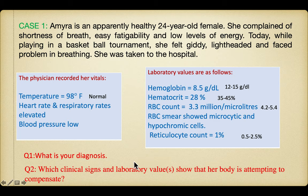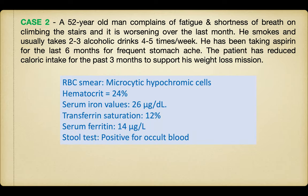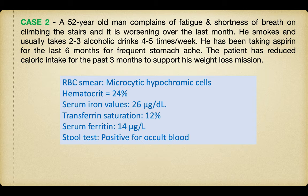Case two: a 52-year-old man. A young girl is more likely to suffer iron deficiency anemia due to excess blood loss during menstruation or dietary deficiency of iron — possibly anorexia nervosa. In such cases, iron supplementation therapy can be given. The 52-year-old man is complaining of fatigue, shortness of breath on climbing stairs, worsening over the last month. He is a smoker, a drinker, and has been taking aspirin — an NSAID — for frequent stomachaches for the last six months, plus reduced calorie intake for three months.